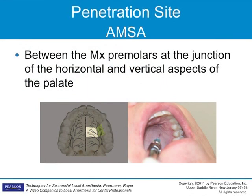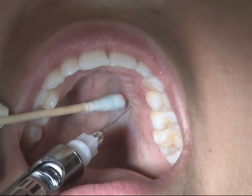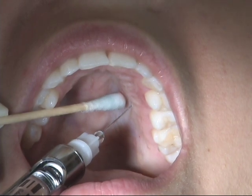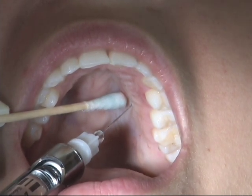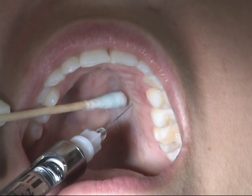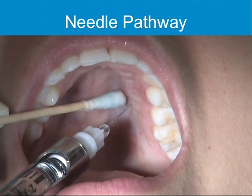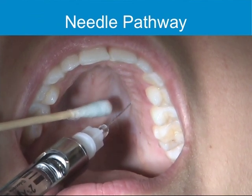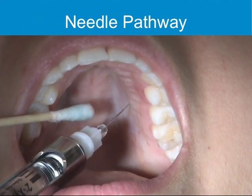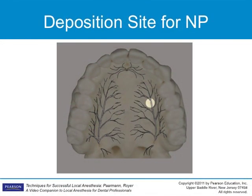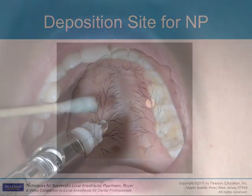The penetration site for AMSA injections is located between the maxillary premolars at the junction between the vertical and horizontal aspects of the palate. The angle of insertion is approximately 45 degrees to the palate, with the syringe barrel positioned over the opposite side of the mouth and the bevel facing bone. The needle pathway is very short through dense palatal tissue directly to the bone. Depth of insertion is variable, often no more than enough to bury the bevel of the needle in the tissue.